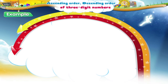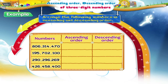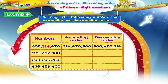Let us revise what we have learnt. Arrange the following numbers in the ascending and descending order. For the first set of numbers, the ascending order is 314, 470, and 806. And the descending order is 806, 470, and 314.